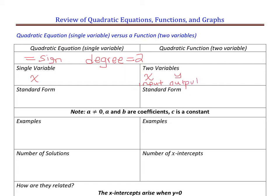A quadratic function has a parabolic shape, so it's usually describing real-world scenarios that have that type of shape. It could be any kind of projectile — a rocket launch, a ball being thrown, water coming out of a fountain — anything with that U-shape. Often the independent variable is t for time, and the dependent variable is h for height. You'll see those two variables used a lot in a quadratic function.